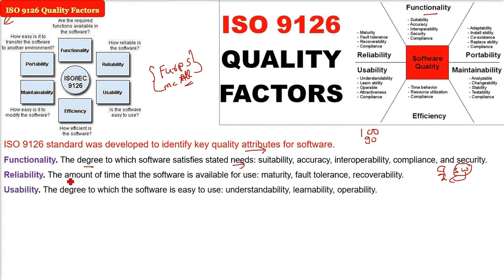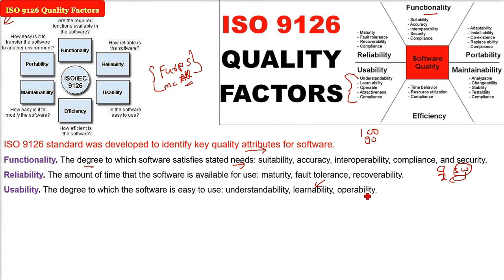Usability is the degree to which the software is easy to use. When someone comes to use the software, they should be able to understand it, learn it easily, and then operate and work on it. These aspects define usability.